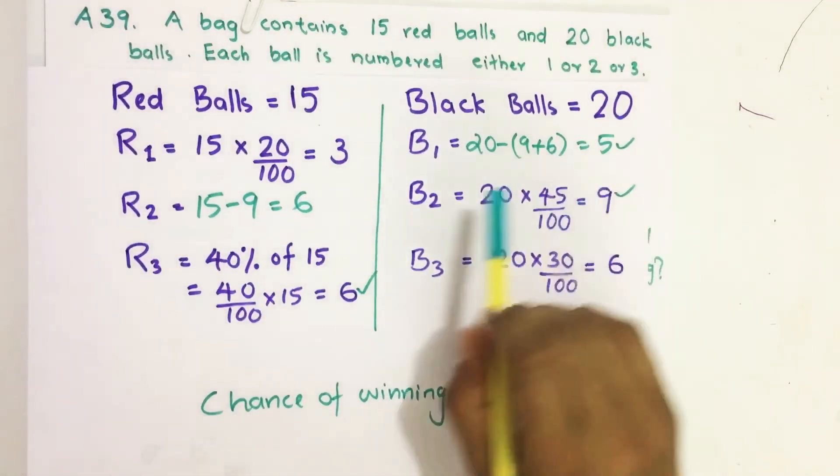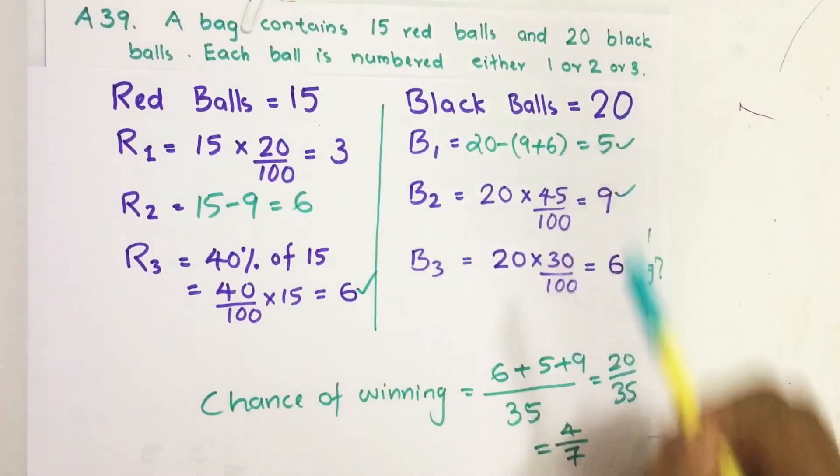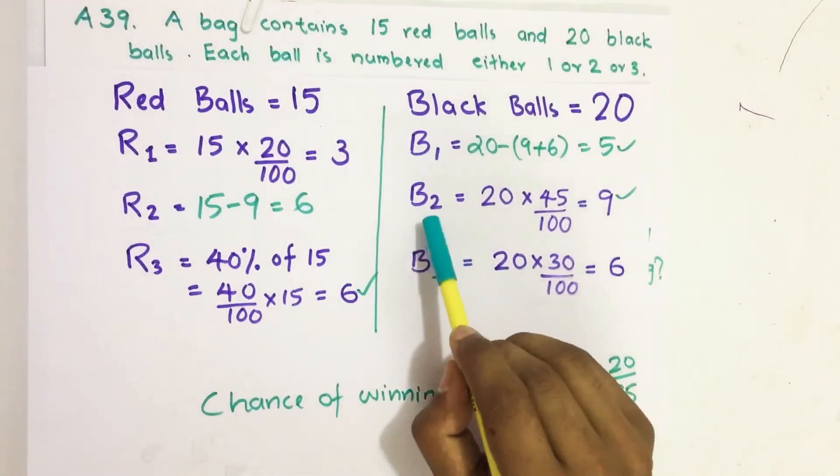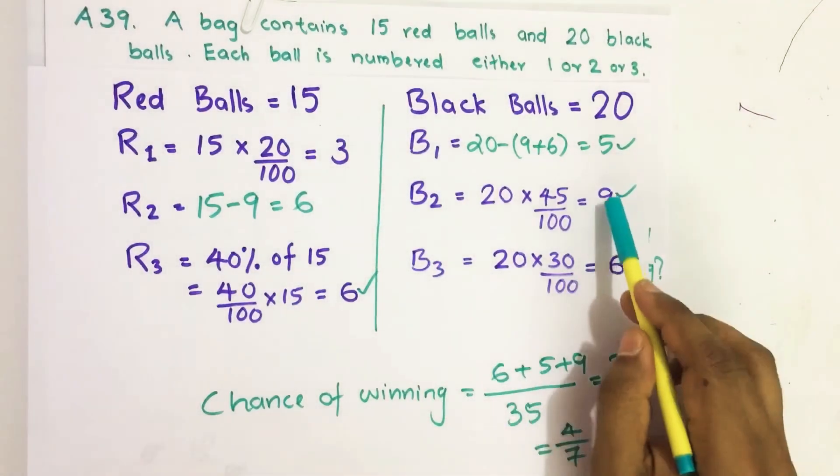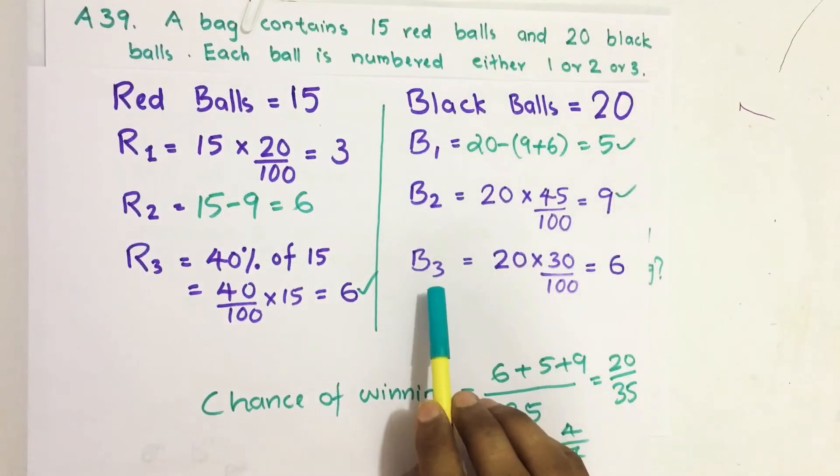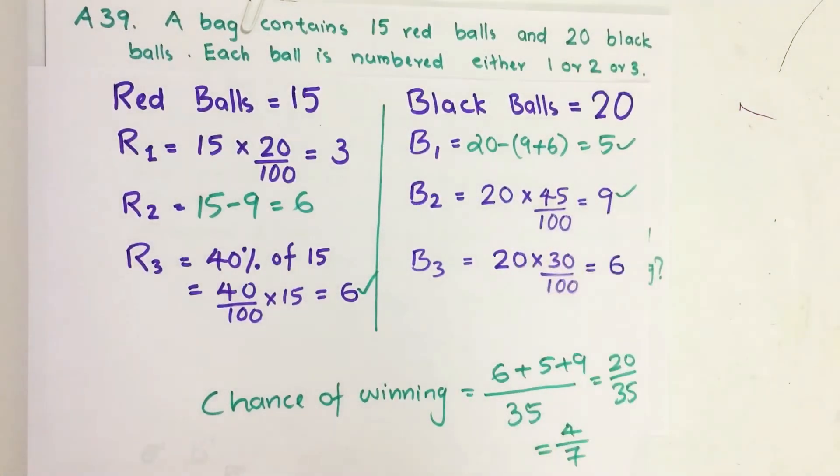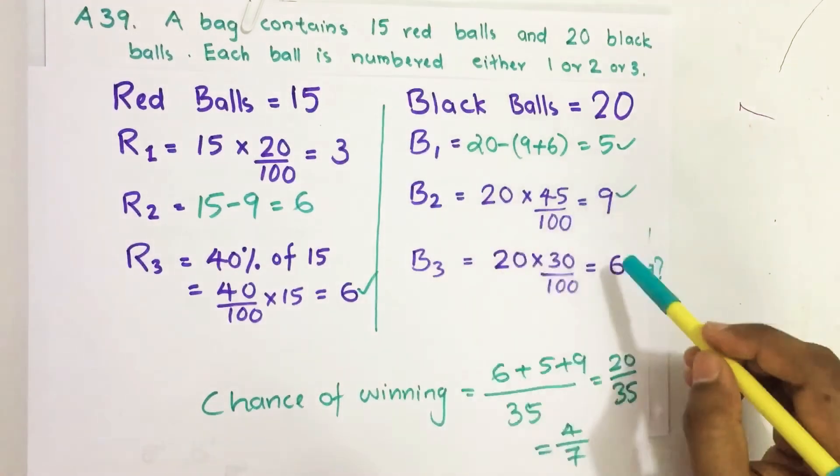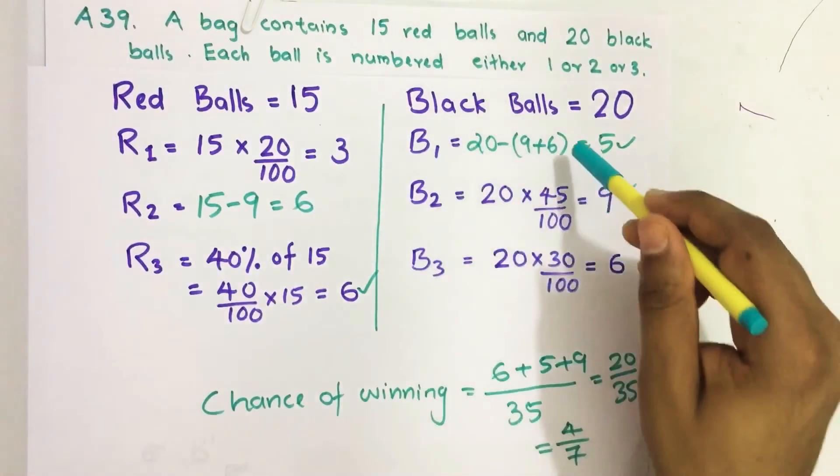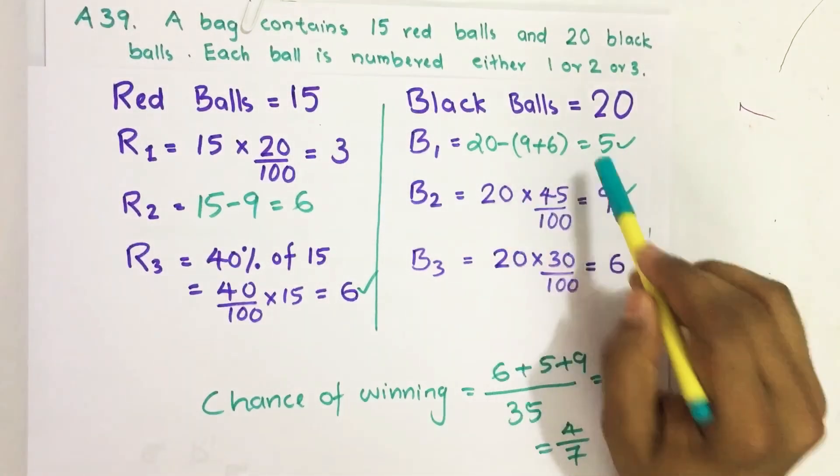Similarly, here it is given that 45% out of these 20 black balls are numbered 2, which equals 9. Similarly, 30% of the 20 black balls are numbered 3, which equals 6. Therefore, the remaining are numbered 1, which is 20 minus 9 plus 6, equals 5.